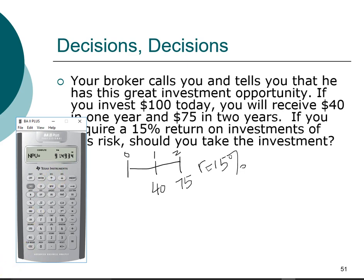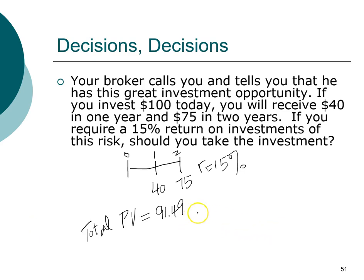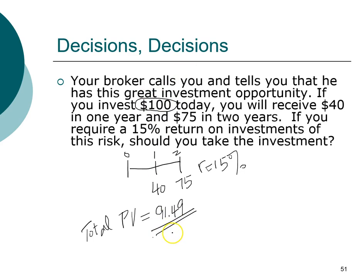The meaning of this present value is that if we invest $91.49 today earning 15%, we'll be able to generate cash flows of $40 in year one and $75 in year two. So this investment is worth $91.49 to us today. If someone asks you to invest $100 for this investment, should you take it? Would you pay $100 for something worth $91.49? Of course the answer is no. That is how you evaluate whether an investment is worthwhile. This concludes our discussion on multiple cash flows, both for present value and future value.